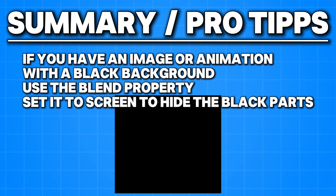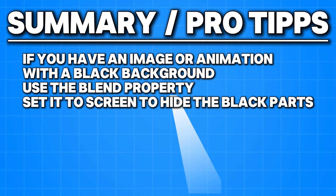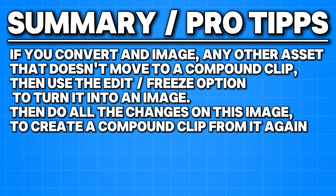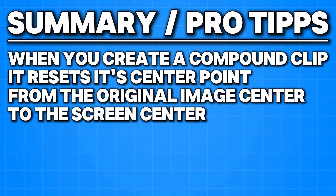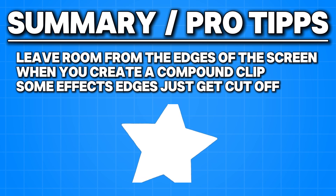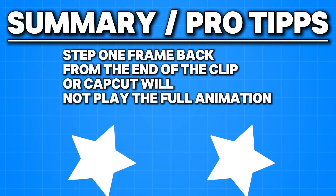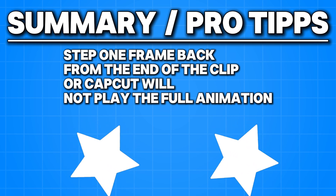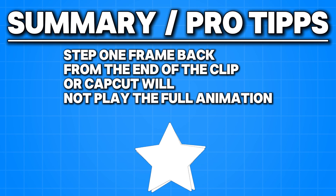If you have an image or animation with a black background, use the blend property and set it to screen to hide the black parts. If you convert an image or any other asset that doesn't move to a compound clip, then use the edit/freeze option to turn it into an image. Then do all the effects and changes on this frozen image so that you can create a compound clip from it again. When you create a compound clip, it resets its center point from the original image center to the screen center. Leave some room from the edges of the screen when you create a compound clip because some effects get cut off at the edges, like with the play pendulum effect. The one-frame step back from the end of the clip is also necessary because if you put it at the very end, CapCut will not play the full animation.